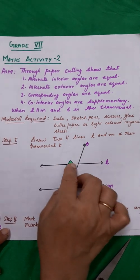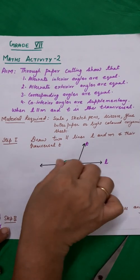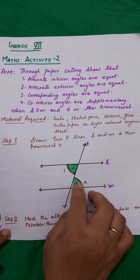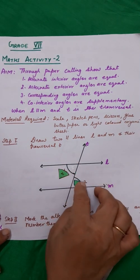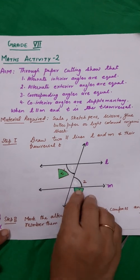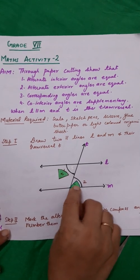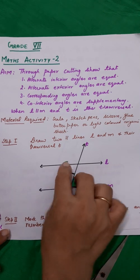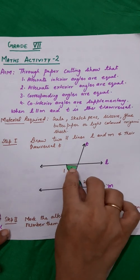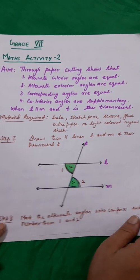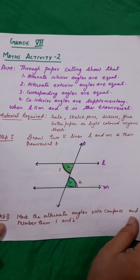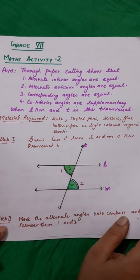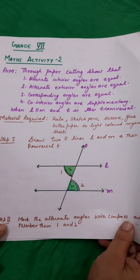Now I will superimpose them on each other by interchanging their positions. I put angle number 1 on angle number 2, and angle number 2 on angle number 1. I observe that they superimpose each other. Hence I can say that the alternate interior angles are equal.